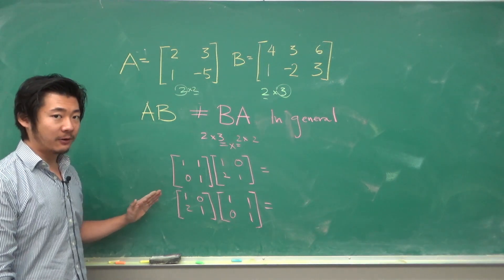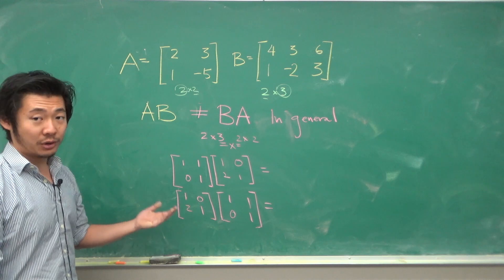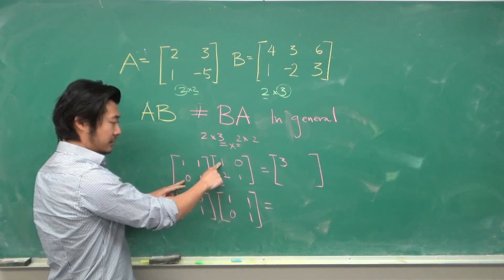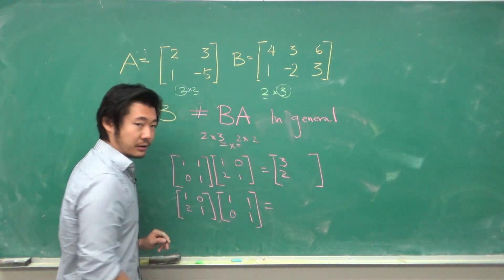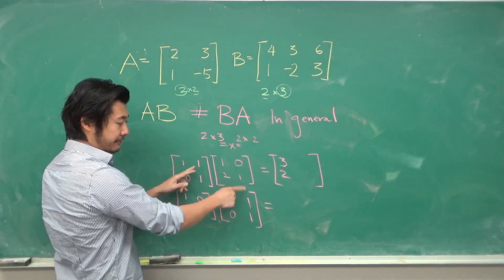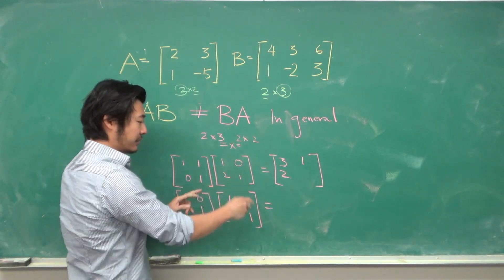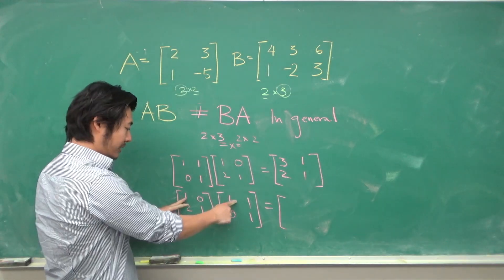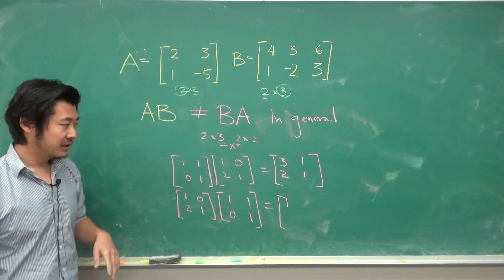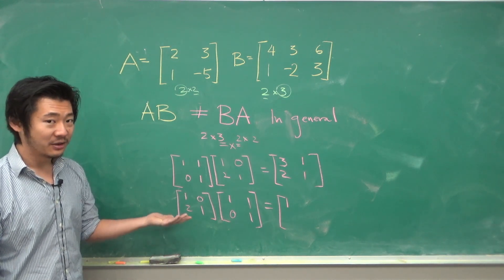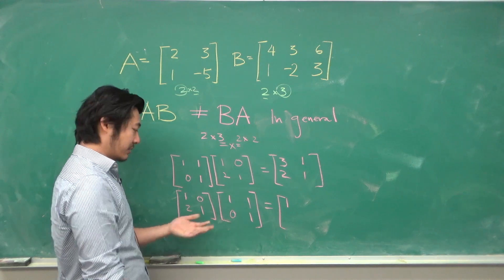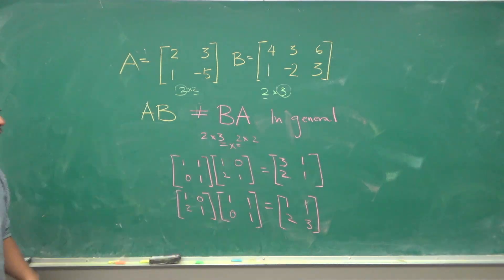For example, if we compute this product, we do row times column: 1 plus 2 is 3, 0 plus 2 is 2, 0 plus 1 is 1, and 0 plus 1 is 1. However, if we do this product, we get 1 plus 0 is 1, so we can already see that this is not going to be commutative. If we do the remainder, this is going to be a matrix like this.